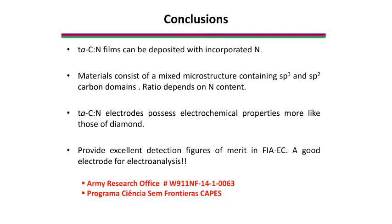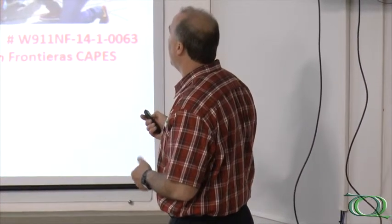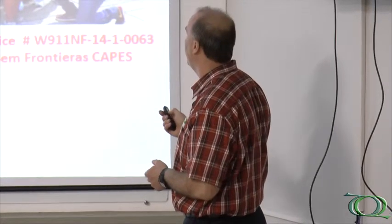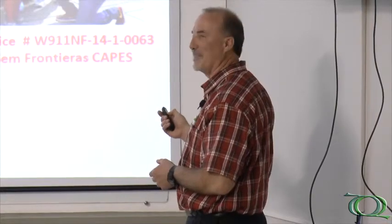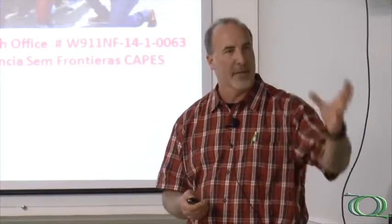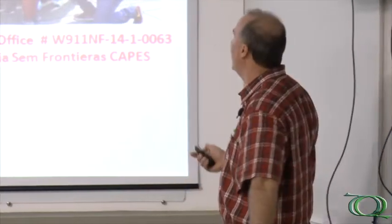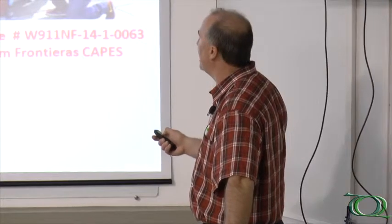I showed you one example, and we now have four or five examples of molecules that require very positive potentials to detect, with excellent detection figures of merit using these ta-C materials. I want to thank the Army Research Office that supports part of this work. Omana did most of the electrochemistry that I showed you today. Paula did some work when she was in the laboratory looking at electrolyte effects on the ta-C electrodes. The flow injection work was done by Dinesha and Joy, a high school student. Thank you for your attention — I'd be happy to answer any questions.